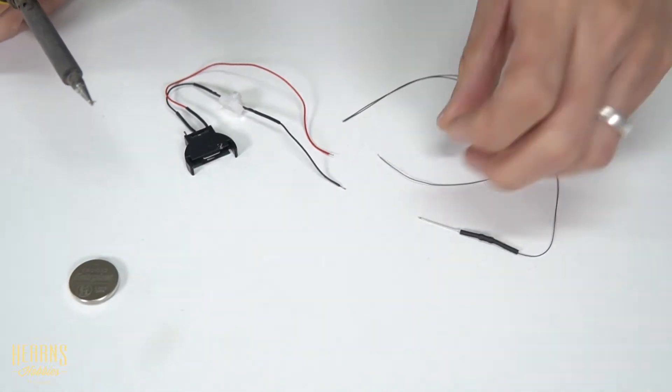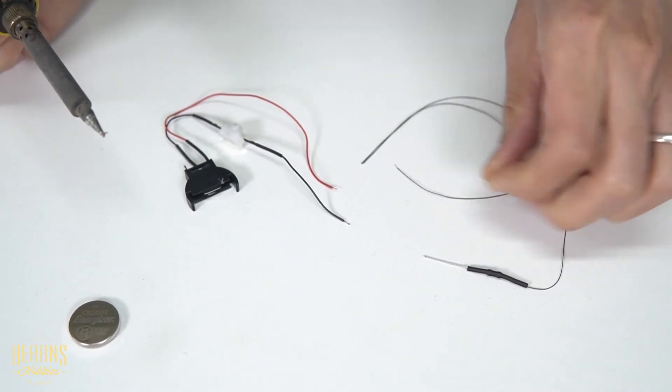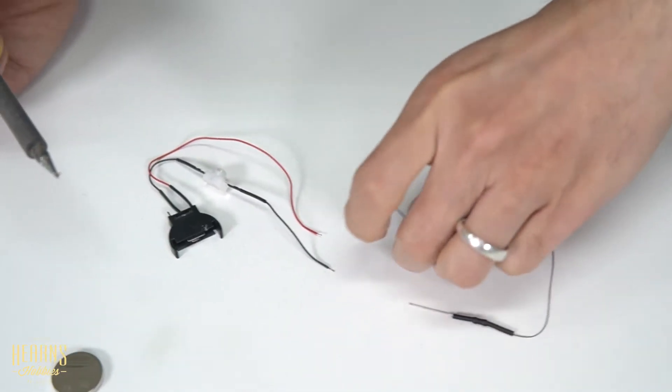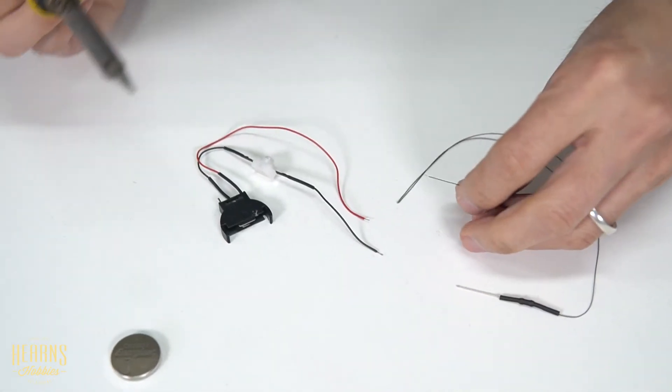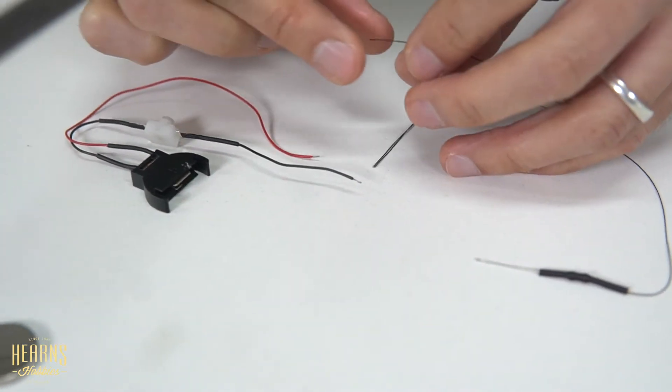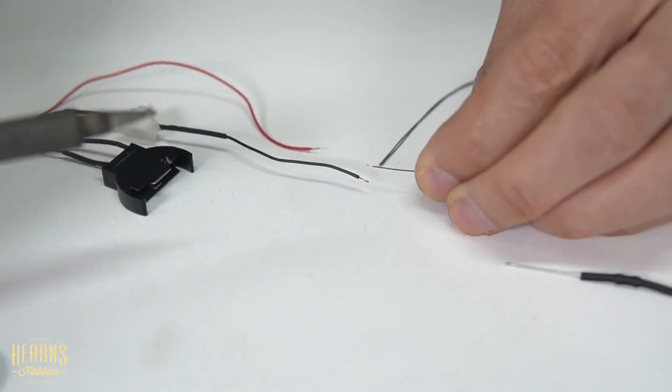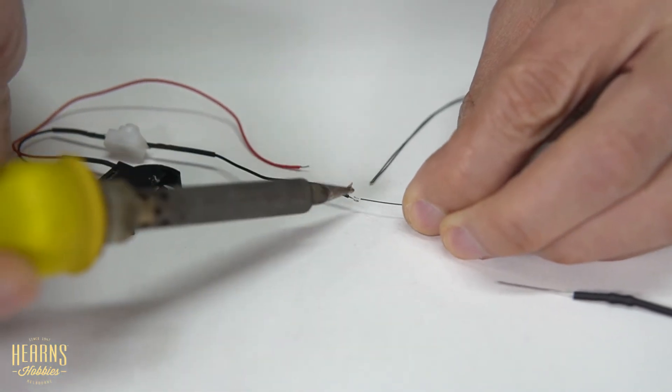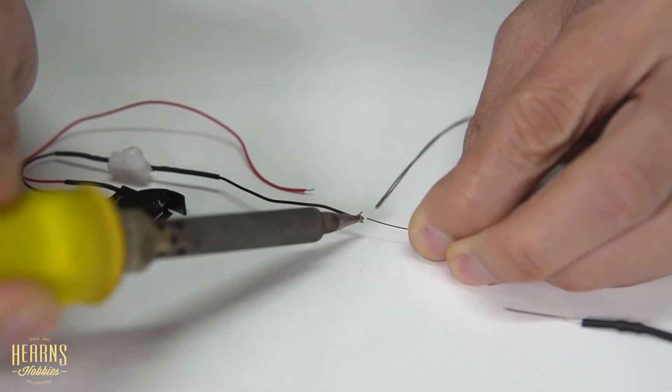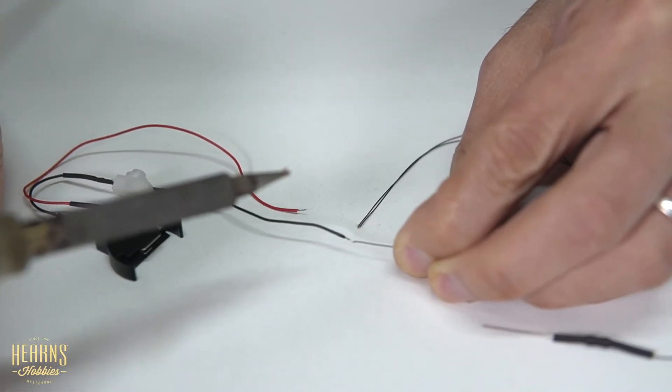This is the negative one here. Let's just bend this so it's a bit elevated so I don't burn the table. I'm just going to hold these two together and then we'll just solder them together. It's joined up.